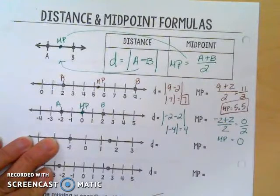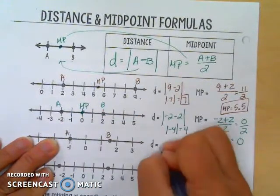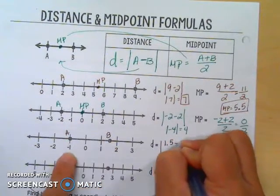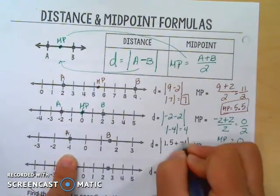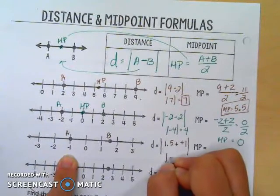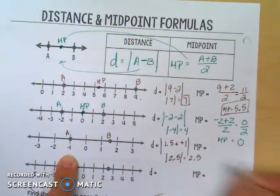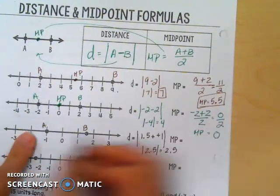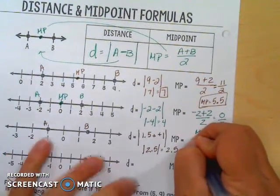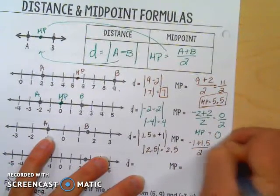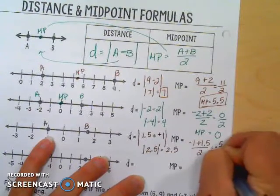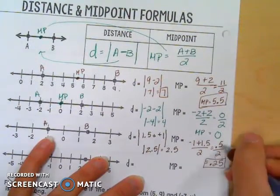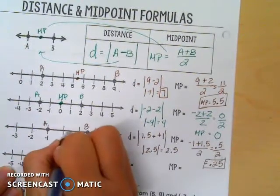Let's do one more together. With A at negative 1 and B at 1.5, we're going to say 1.5 minus negative 1 — absolute value. Minus negative becomes plus plus, so that's 2.5, and the absolute value is 2.5. Counting on the number line: 1, 2 and a half — yes, the distance is 2.5. For the midpoint: negative 1 plus 1.5 divided by 2 gives 0.5 divided by 2, which is 0.25. A half divided by 2 is a quarter, so the midpoint is at 0.25.